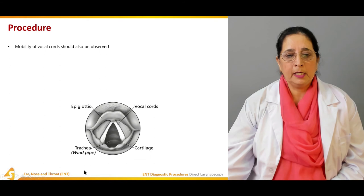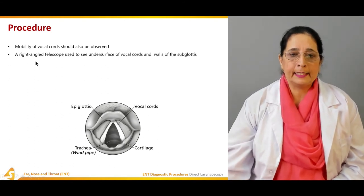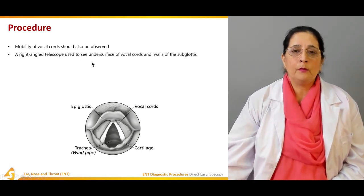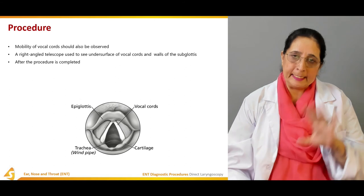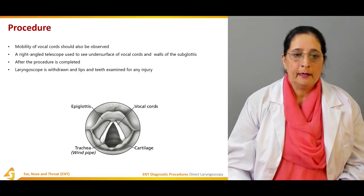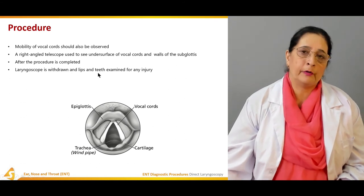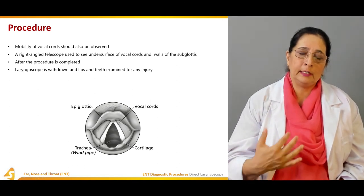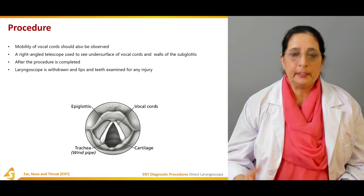Mobility of the vocal cords should also be observed. A right-angle telescope is used to see the undersurface of the vocal cords and the wall of the subglottis. After the procedure is completed and all structures are examined, the laryngoscope is withdrawn, and the lips and teeth are examined for any injury sustained during the procedure.